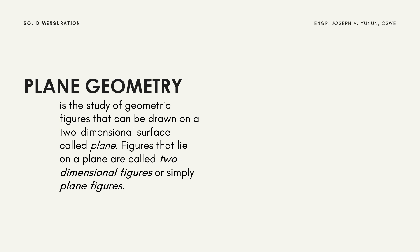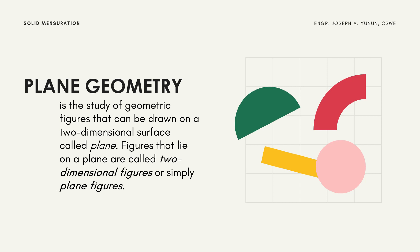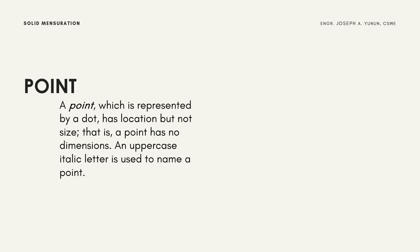Plane geometry is the study of geometric figures that can be drawn on a two-dimensional surface, called plane figures. A point, represented by a dot, has a location but no size — that is, a point has no dimension. An uppercase italic letter is used to name a given point, as shown in the figure with points A, B, and C.